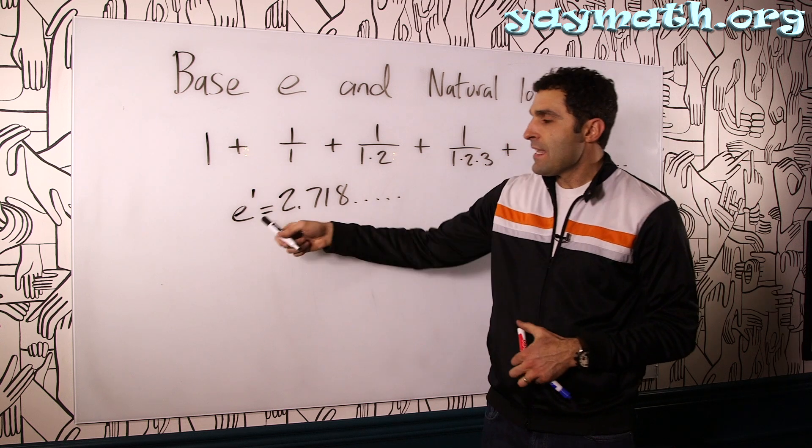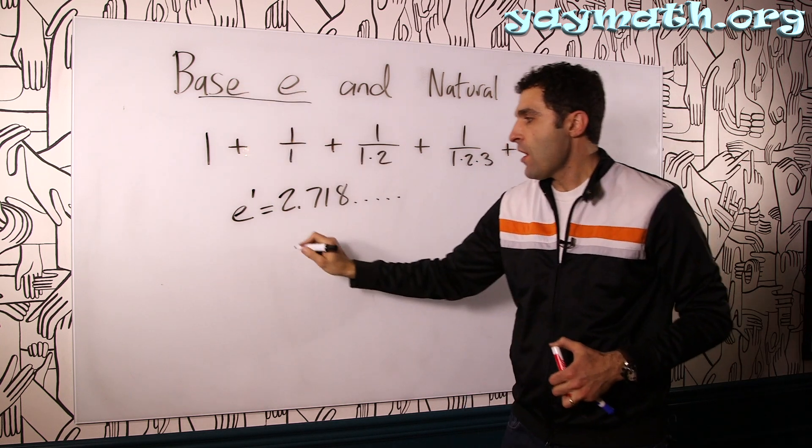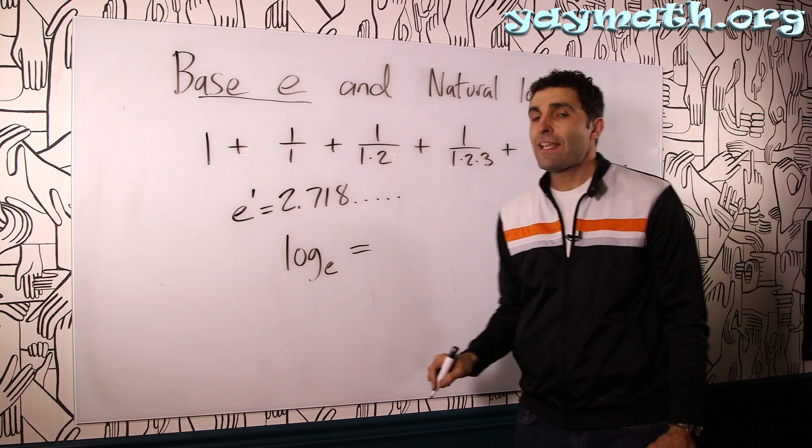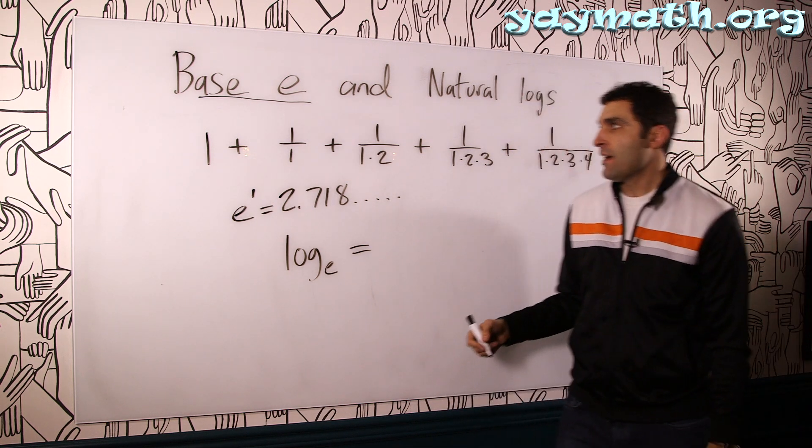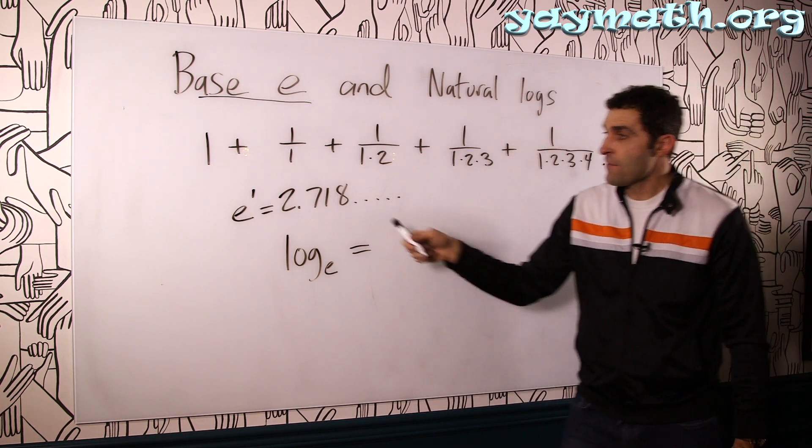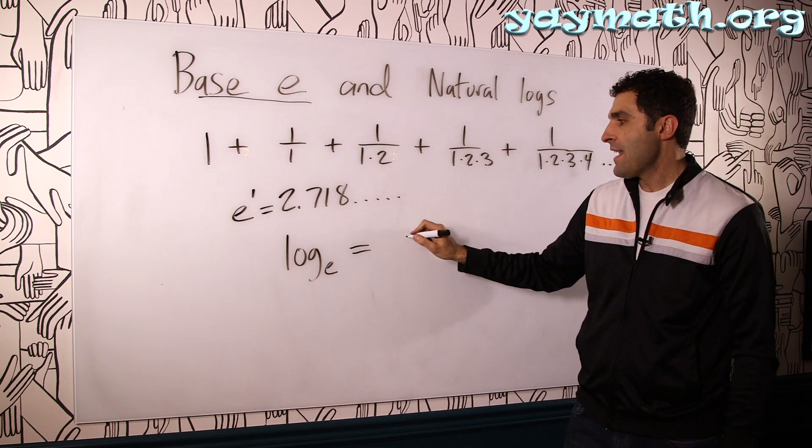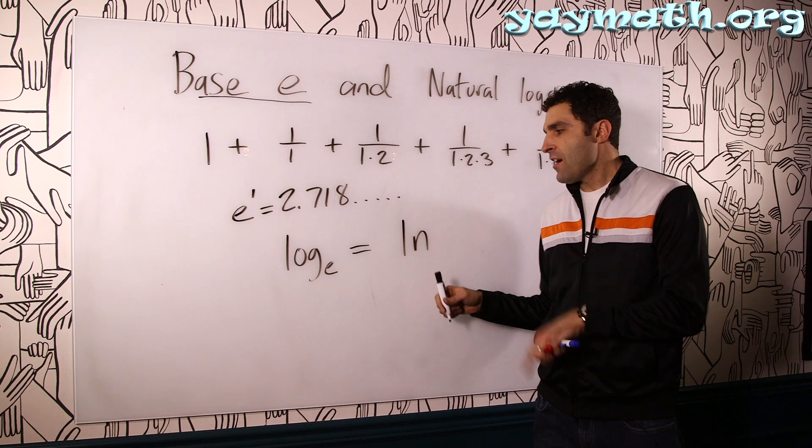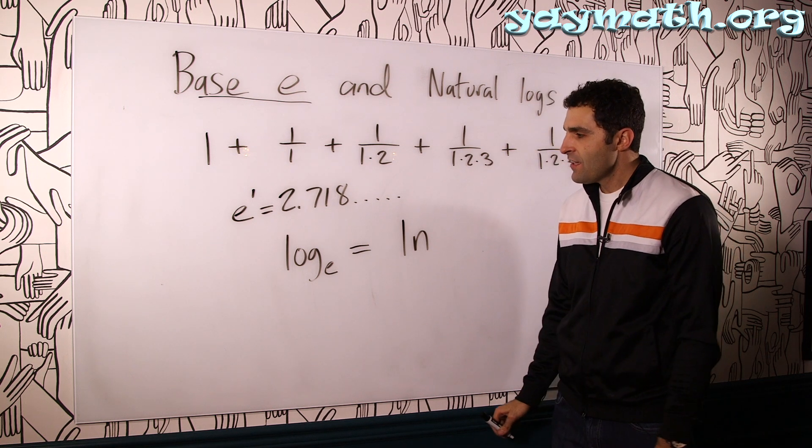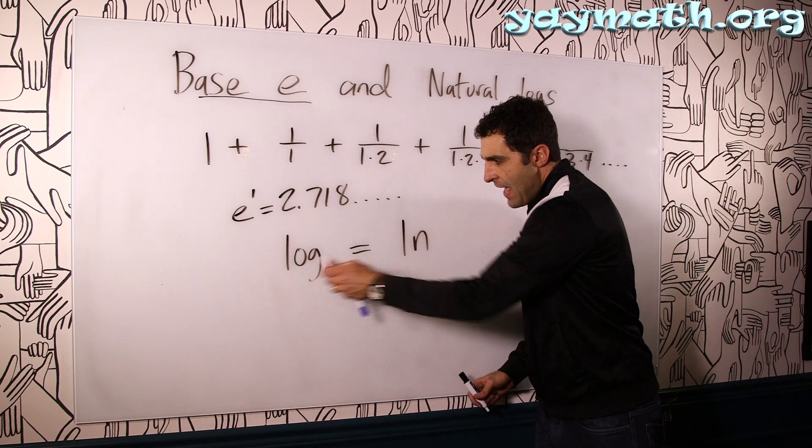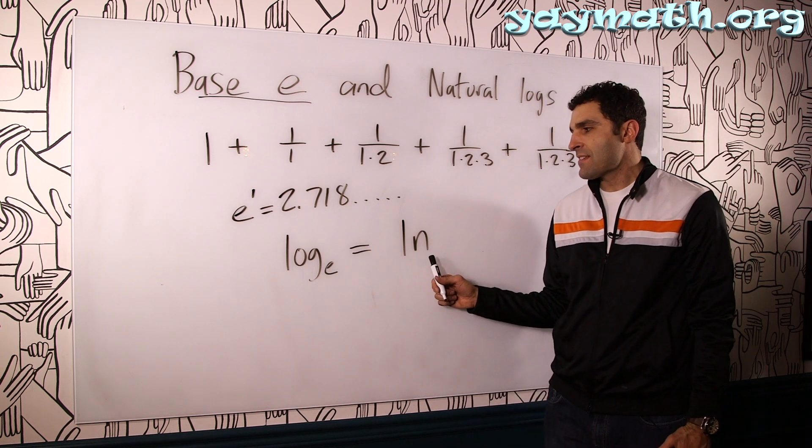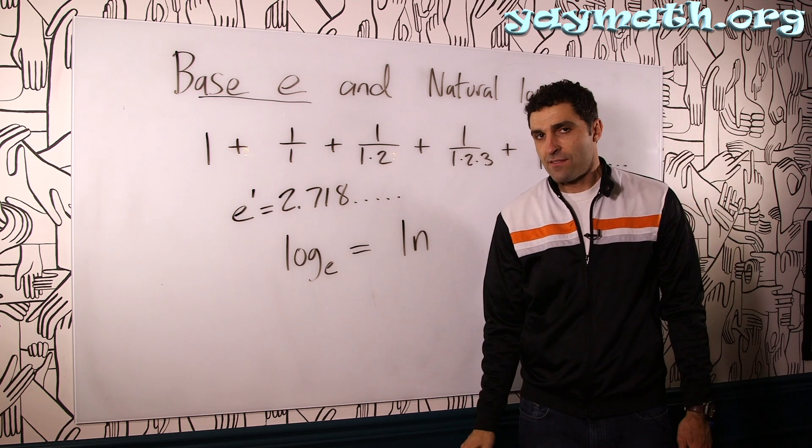So if you have a base of E in your log, log base E is called a natural log. I like to think it natural because this is a number that occurs in nature. And natural log goes like this. I always thought it should be called NL for natural log. It's like log natural. But I guess they insisted on having the L first for some reason, like it's a log. But LN basically is a log of base E. That's all that is.